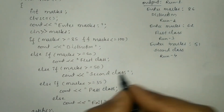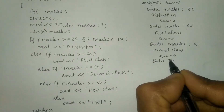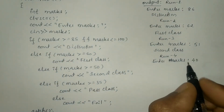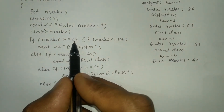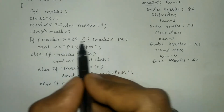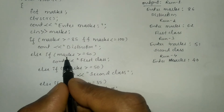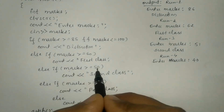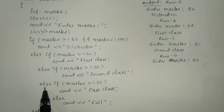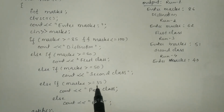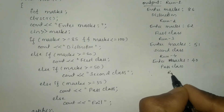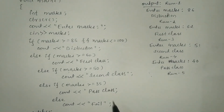Run 4: again it asks the user to enter marks. This time I am going to enter 40. We check: 40 is greater than or equal to 85 — no, false. 40 is less than or equal to 100 — true. False AND true is false, so distinction will not print. 40 is greater than or equal to 60 — no, false, so first class will not print. Else if: 40 is greater than or equal to 35 — yes, condition is true — so it is going to print 'pass class'.